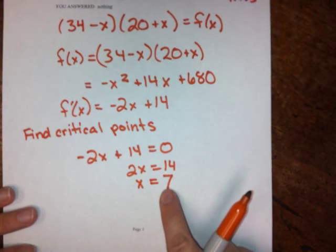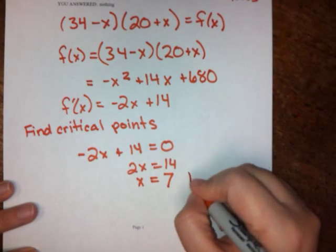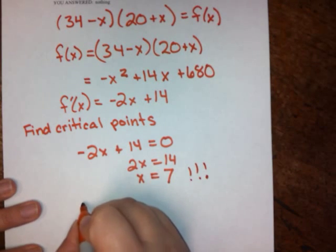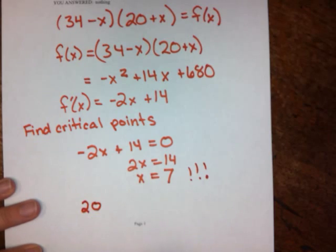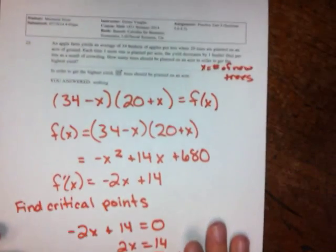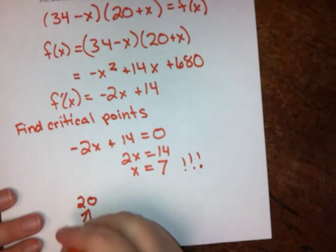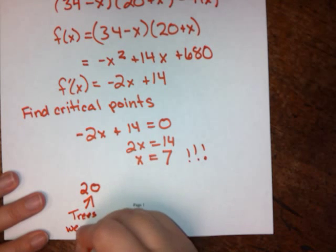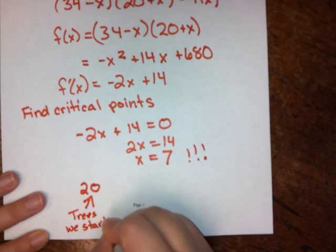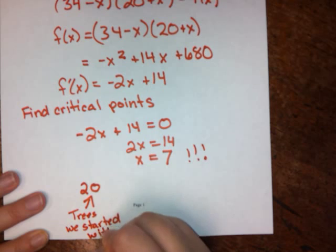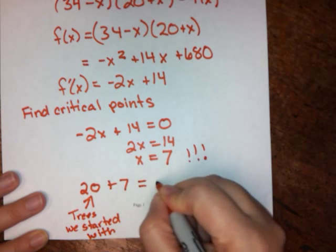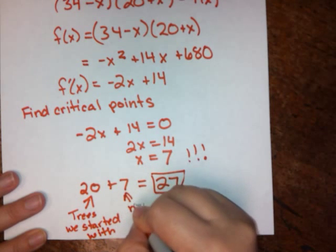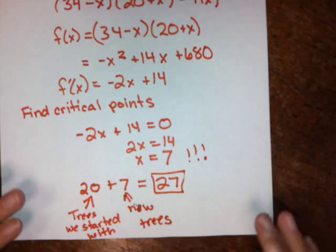But 7 is not your answer. So look out. I'll put some exclamation points here. Don't stop here. Our answer is actually the number of trees we started with. That's 20. And you'll have to go back into your question. It might be a different number. So 20, that's trees we started with, plus the number of new trees we planted. So the actual answer here is 27. So this is new trees.